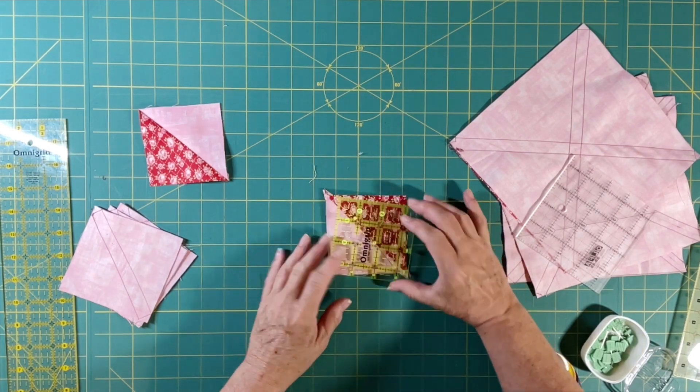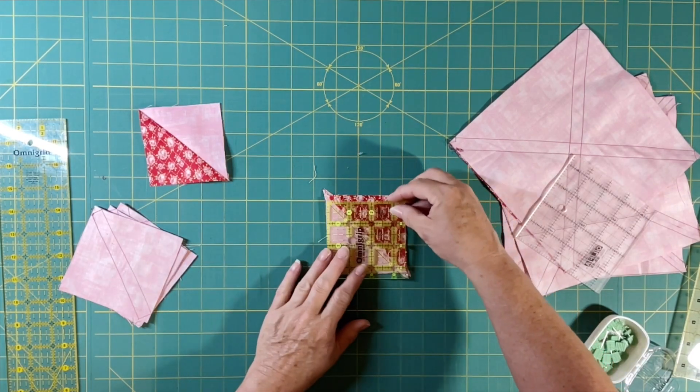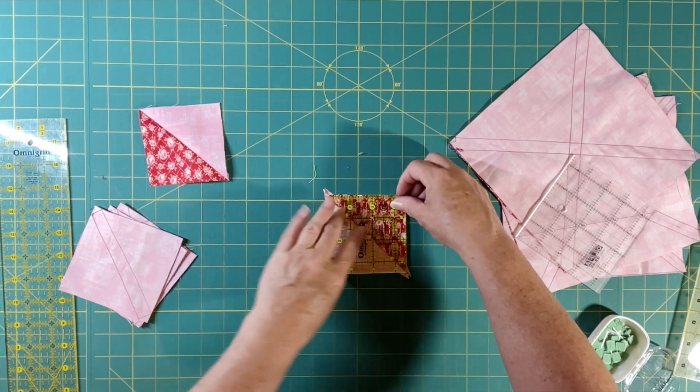You may have one that's exactly three and a half. In that case you would just put your diagonal line that you see here right on that diagonal seam line and trim all the way around.